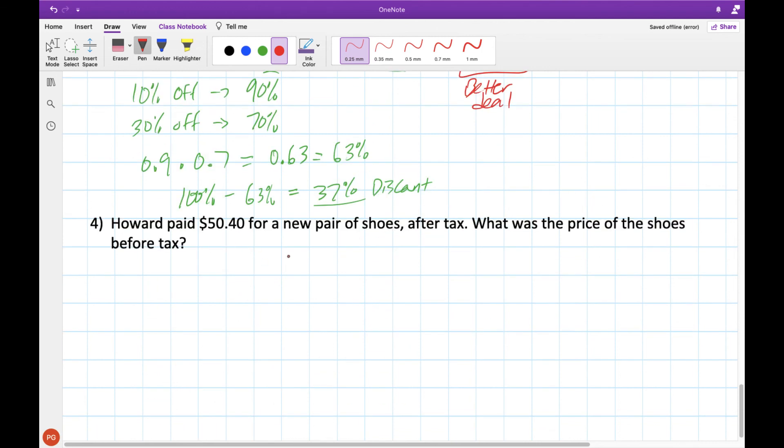Lastly, Howard paid $50.40 for new pairs of shoes after tax, and we want to know the price of the shoes before tax. This one's a little bit tricky, and we haven't gone over a question like this yet. The way that we would solve it is, well, if we knew the price before tax, let's call that price question mark, right? That's something we don't know. What we do know is to calculate the price after tax, we would take that question mark and multiply it by 112%.